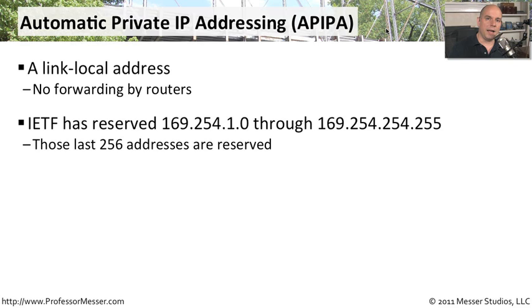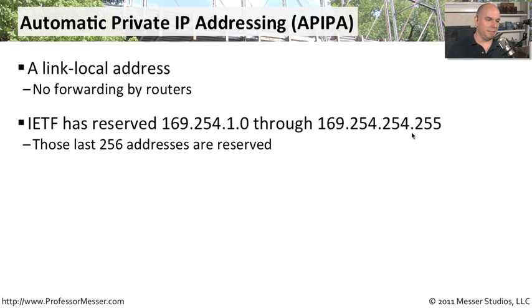Looking at the block that's been assigned, the IETF has reserved 169.254.1.0 through 169.254.254.255. Those last 256 addresses are reserved, so you'll notice there's no 255.255. We have a whole section of IP addresses that are reserved, but still there's a very large block here we should be able to take advantage of.